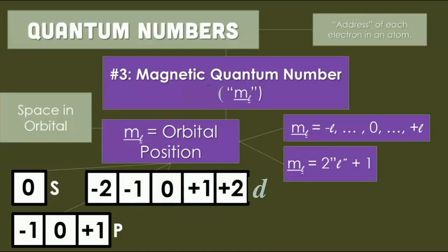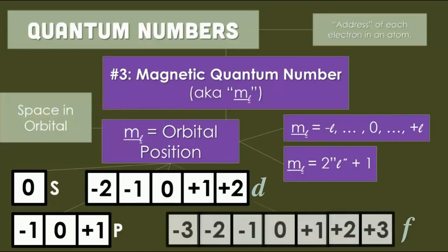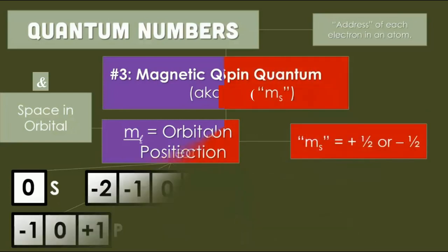Look here. How can you get that? For f, l is 3. 2 times 3 is 6 plus 1, equals 7 values.